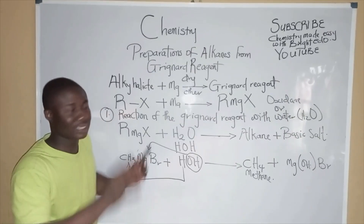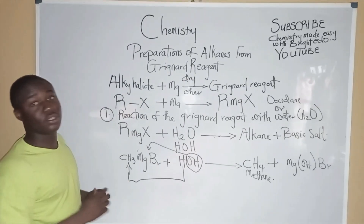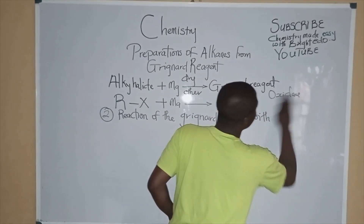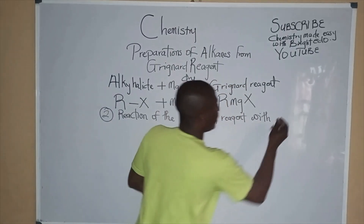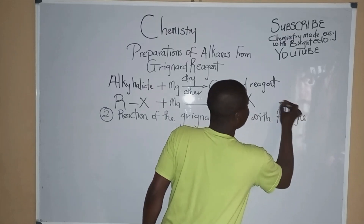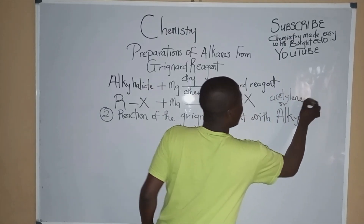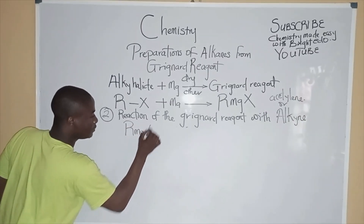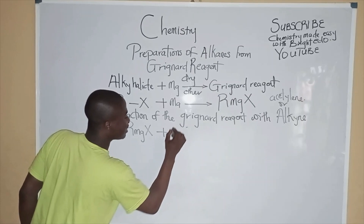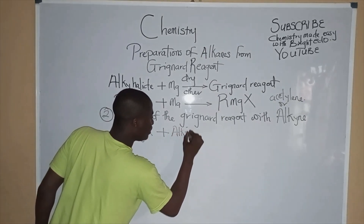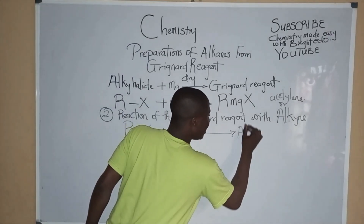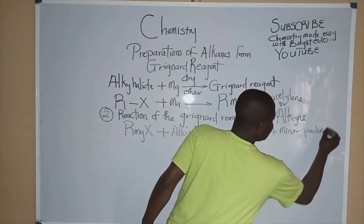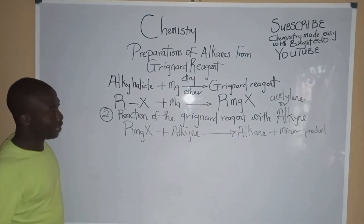Now let's react the Grignard Reagent with another compound mentioned earlier — alkynes. Alkynes are also called acetylenes. This is the Grignard Reagent R-MgX reacting with an alkyne. We'll get alkane as the major product and another minor product. Let's talk about the reaction mechanism.